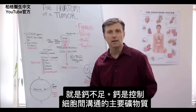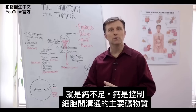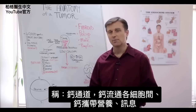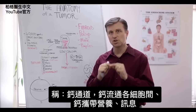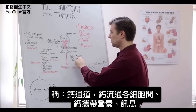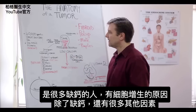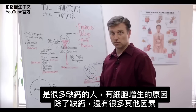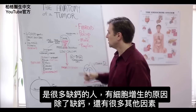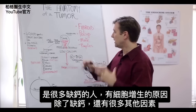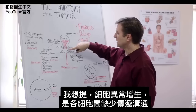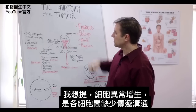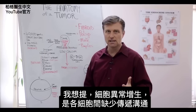Calcium is the main mineral that controls all of the communication between the cells, because you have these things called calcium channels. Calcium carries nutrition and information between the cells. That's why a lot of people with low calcium start to get all these issues with extra cell growth. But it's not just low calcium — it's a lot of other factors. What starts this process is a lack of communication in the cell.